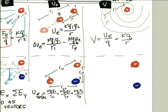Just like with potential energy, problems often ask for a potential difference ΔV between two points. If you designate point P and point Q, you find V at P and subtract V at Q, noting that each point has a different radius R from the source charge.